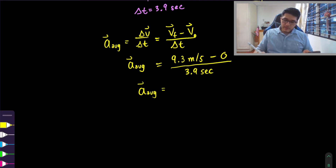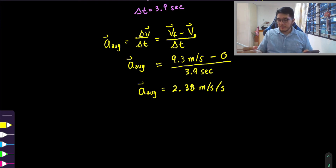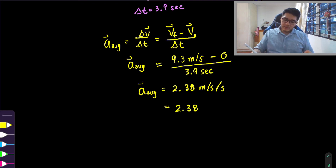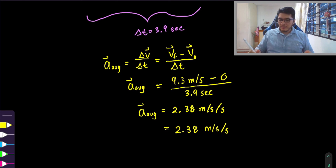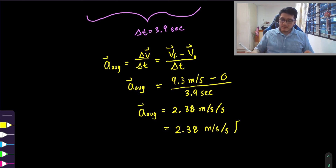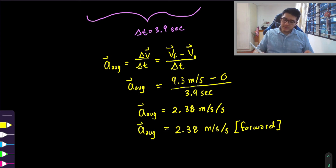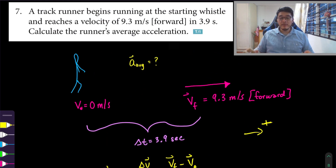Our average acceleration is 2.38 meters per second squared. It is a positive value, which suggests it's in the same direction we associated with positive — which is forward, to the right. Don't forget it is a vector quantity, so you have to state both the magnitude and the direction.